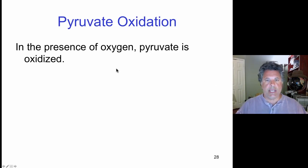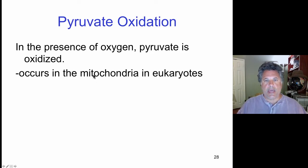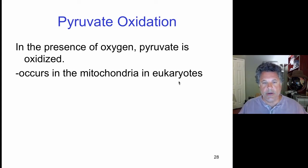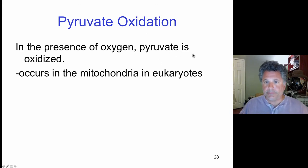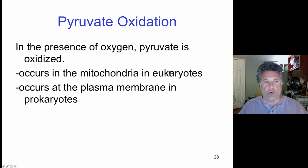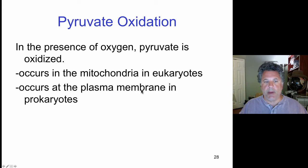So let's go to pyruvate oxidation. At the end of glycolysis we have two molecules of pyruvate, and the oxidation of pyruvate occurs in the mitochondria — specifically in the mitochondrial matrix, inside the inner mitochondrial membrane. So pyruvate must be transferred to the mitochondrial matrix, because remember pyruvate is generated in the cytoplasm during glycolysis. We must transport pyruvate across two mitochondrial membranes to get it into the matrix. In prokaryotes, which don't have mitochondria, this all occurs at the plasma membrane.